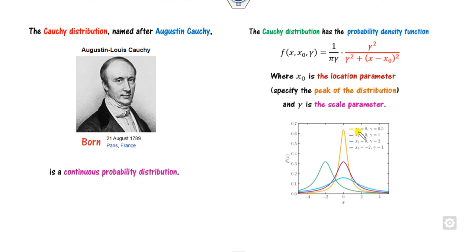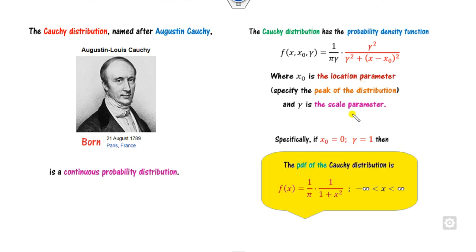If you draw the probability density function of the Cauchy distribution, the yellow color shows location is 0 and scale parameter is the smallest at 0.5, giving a high peak. For the green and blue colors, gamma is 1 and 2 respectively. The blue color shows a wider width, demonstrating the impact of the scale and location parameters. Setting gamma equal to 1 and x0 equal to 0 gives the standard PDF.